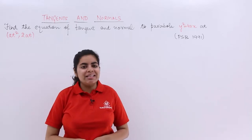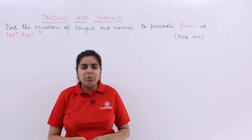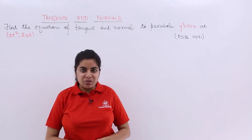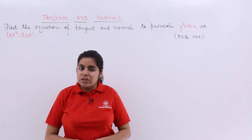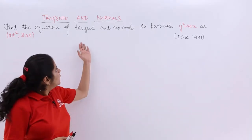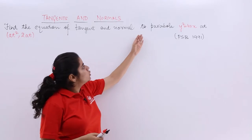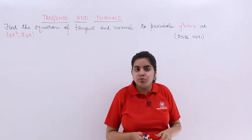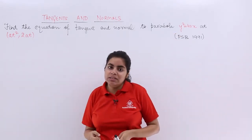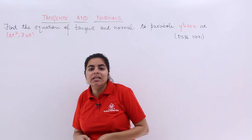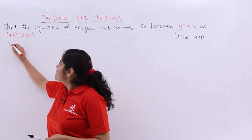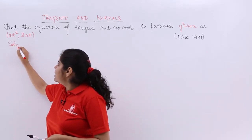In this video, let's see a numerical problem based on equations of tangents and normals. The question is: find the equation of tangent and normal to the parabola y² = 4ax at the point (at², 2at). This is a previous year examination problem as well. Now let's write the solution and start.